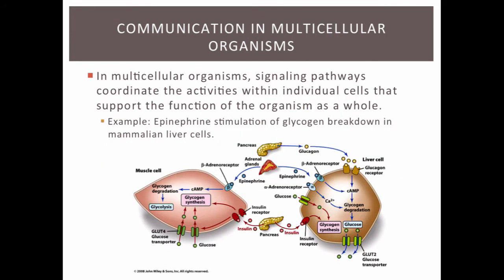Now let's look at communication in multicellular organisms. In multicellular organisms, signaling pathways coordinate activities within individual cells to support the function of the organism as a whole. As humans, all of our cells need to know when to make certain proteins and how to interact. The specific example we'll discuss is how epinephrine stimulates glycogen breakdown in mammalian liver cells — epinephrine causes our livers to break down glycogen into glucose.